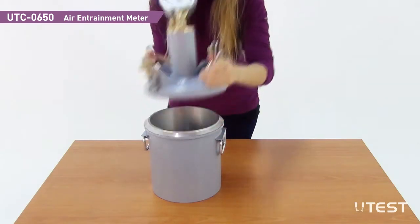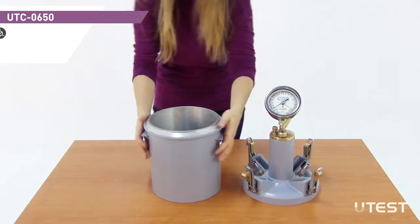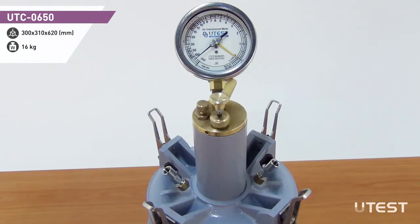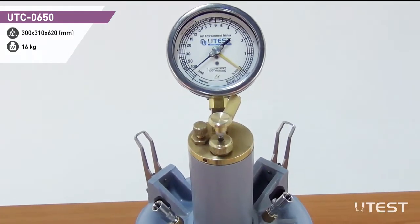It consists of a 7 litre capacity cylindrical measuring ball and cover assembly, incorporating pressure gauge, air pump and valves.